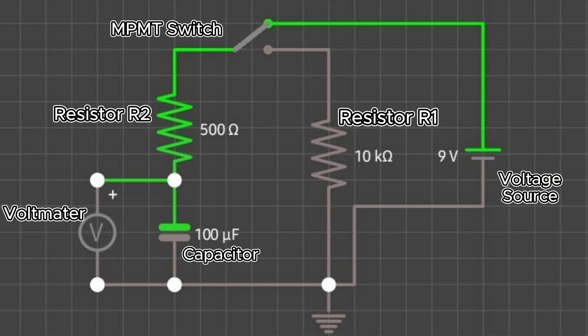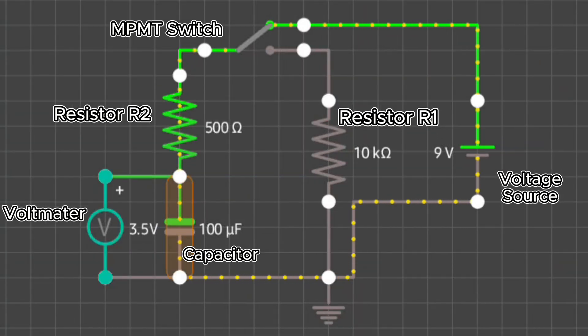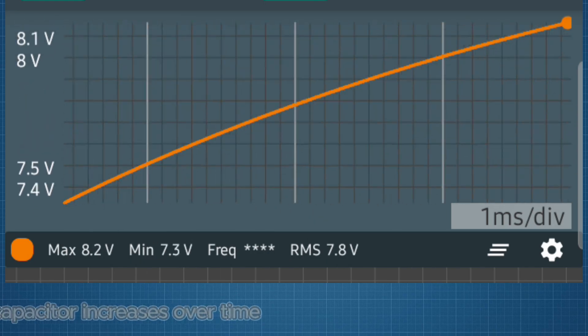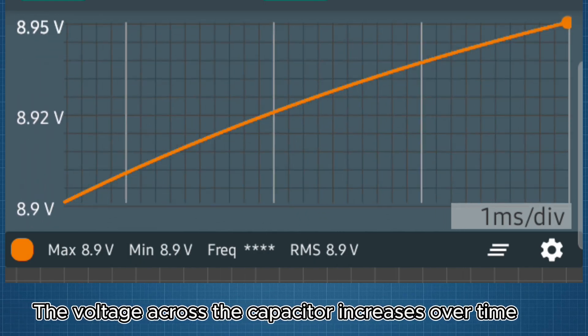When a voltage is applied to an RC circuit, the capacitor starts to charge through the resistor. The charging follows an exponential curve, and the voltage across the capacitor increases over time.